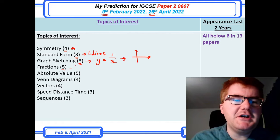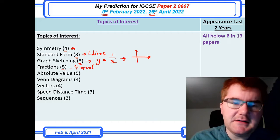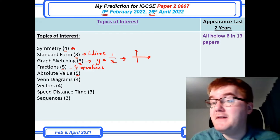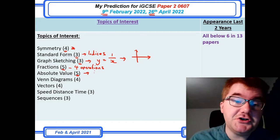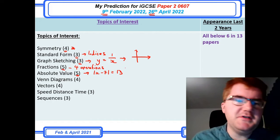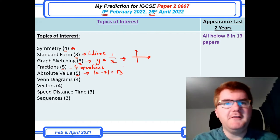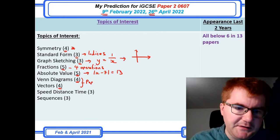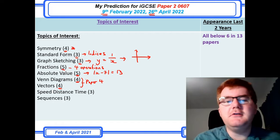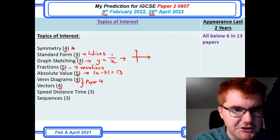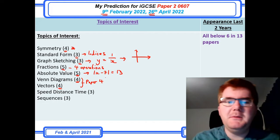Fraction work is usually the four operations — adding, subtracting, multiplying, and dividing fractions. Absolute value is quite high at 5 out of 13 papers; this can involve solving an equation like the modulus of x minus 7 equals 13, or applying the absolute value function to a graph. Venn diagrams and vectors are generally Paper 4 topics but occasionally appear on Paper 2 as well, so it's worth revising them.